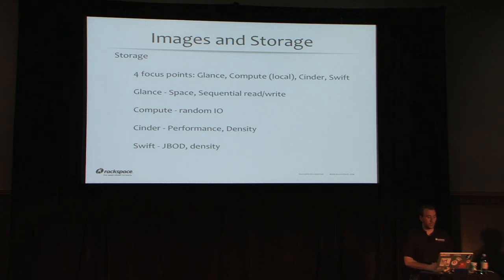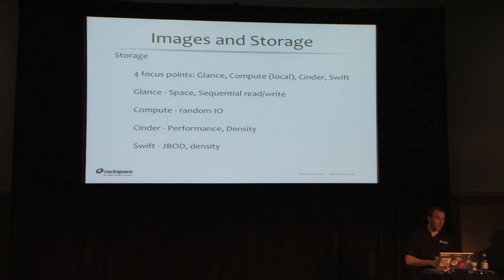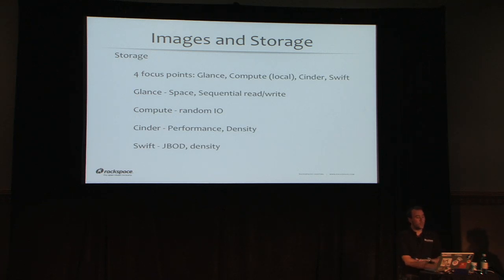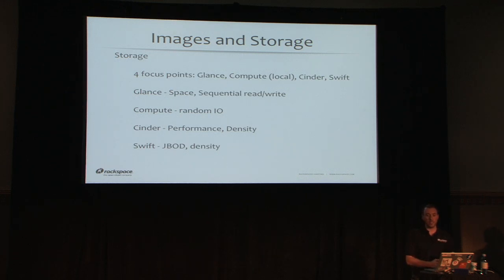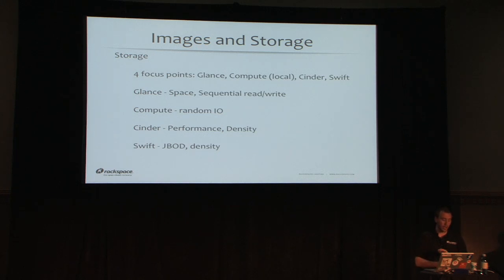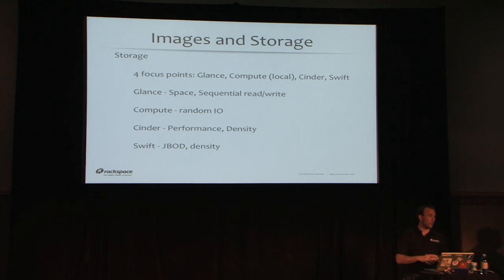For the four storage focus areas: Glance is focused on space and sequential read/writes. Compute is focused on random IO, since all your instances compete for IO time — a few hundred IOPS across 20 instances can become a problem, so build for random IO with RAID 10 or SSDs. Cinder requires performance including network performance since it's iSCSI, plus density — make full use of your head unit. If your head unit has many cores, ensure you're building the right density of Cinder disks. Also watch interrupt load on a 10 GbE network with heavy Cinder use.